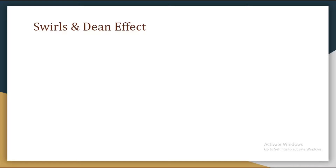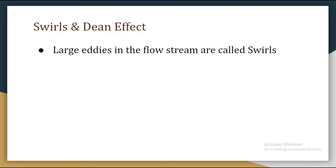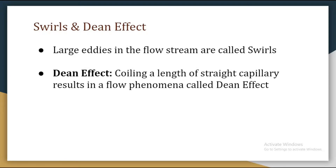Now a very important thing on this slide is swirls and the Dean effect. The Dean effect is a very important question for viva and interviews. When we find large eddies in a flow stream, they are called swirls. Coiling a length of straight capillary results in a flow phenomenon known as the Dean effect — the flow will no longer be laminar. That particular effect is called the Dean effect.